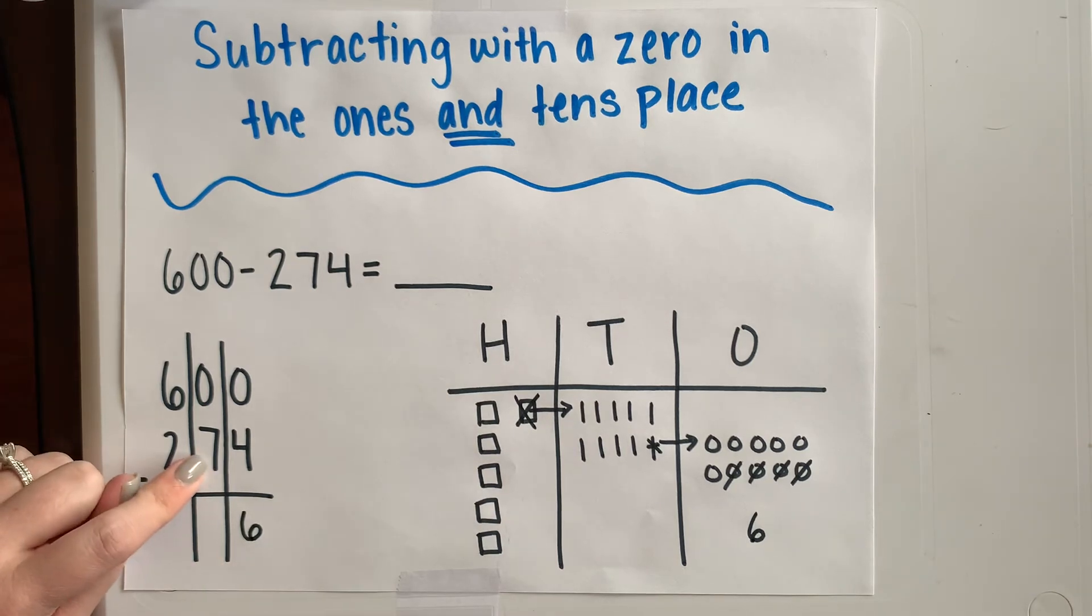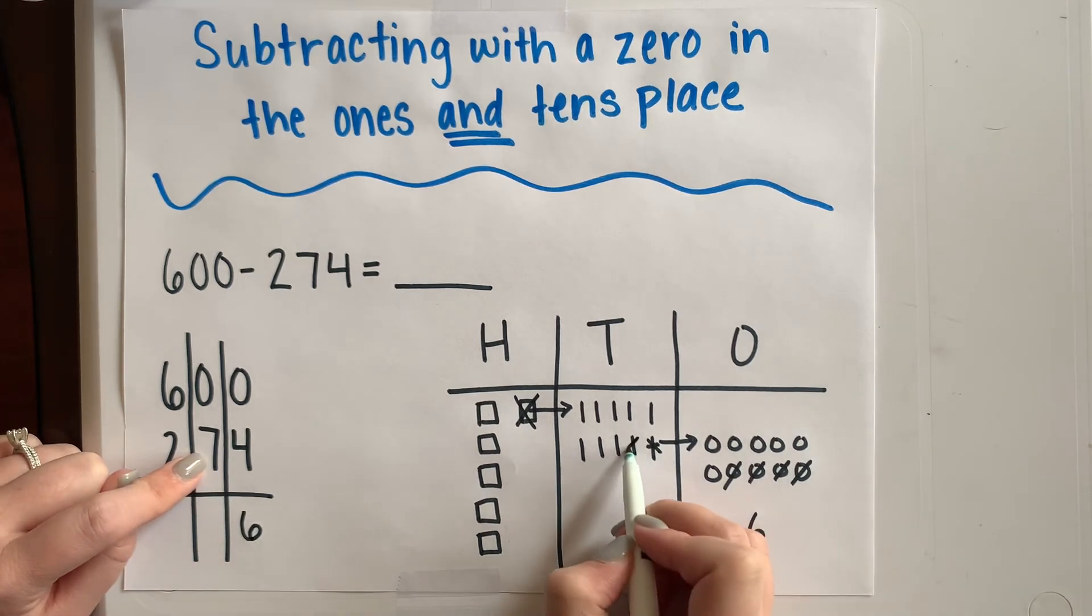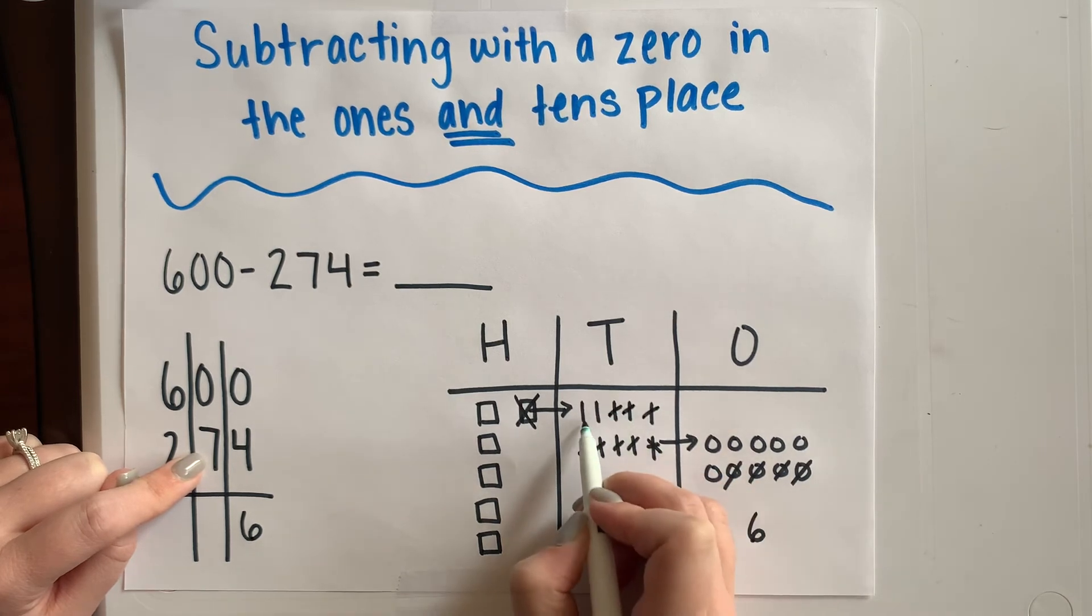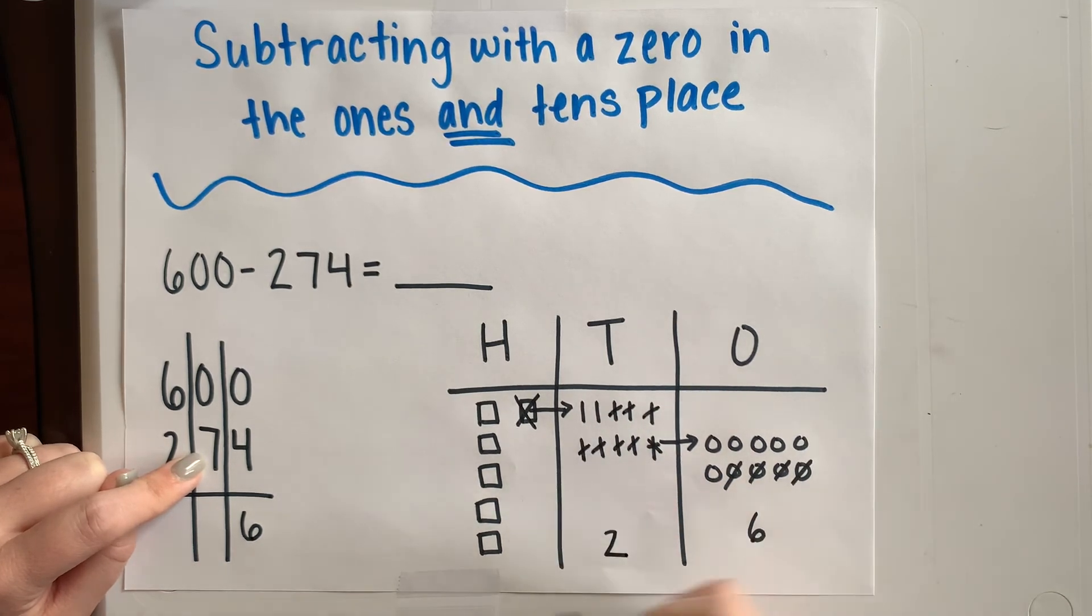Now I need to take away seven tens. One, two, three, four, five, six, seven. I'm left with two tens left over.